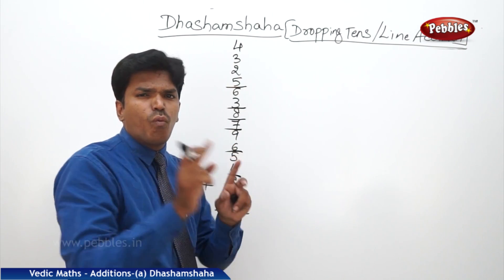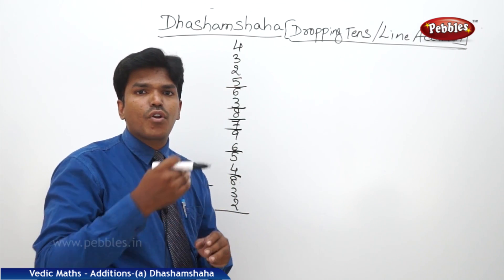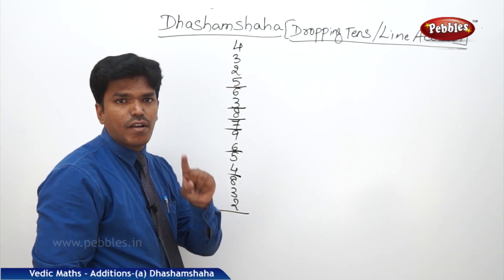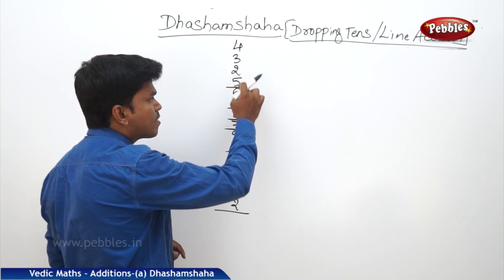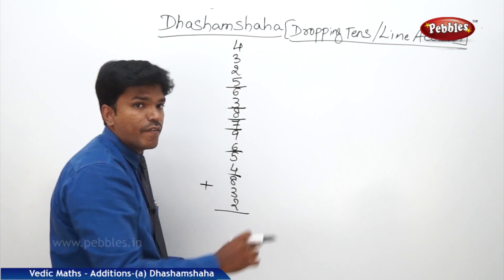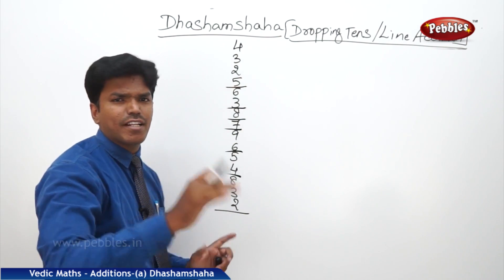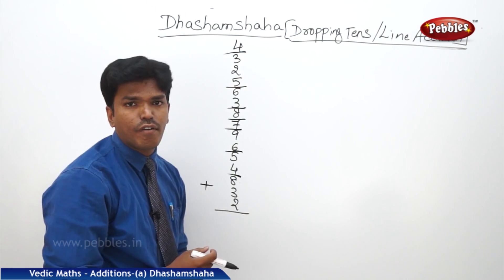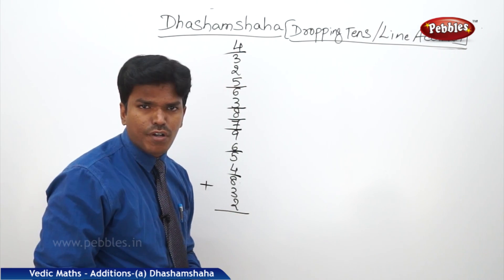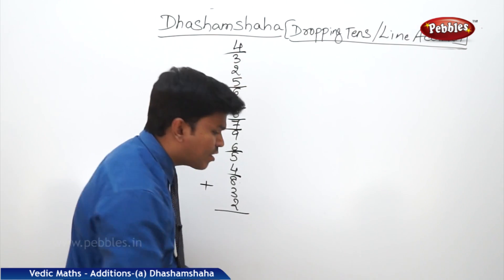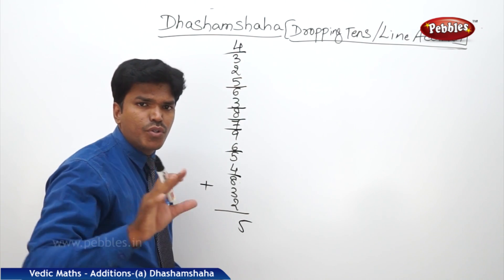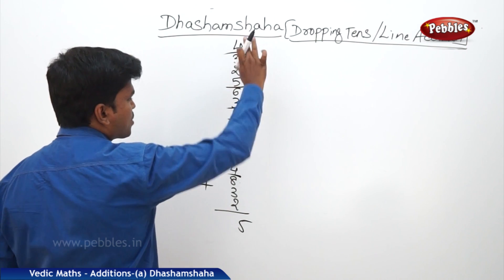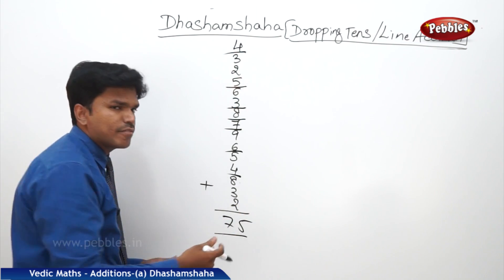Immediately carry that 1 to the next number. Whatever the number, after dropping 10, you need to carry to the next number. So 1 plus 5? 6. 6 plus 2? 8. 8 plus 3? 11. More than 10, so again drop a 10. Remaining is 1. So 1 plus 4? 5. Lastly, the remaining is 5. Write that 5 immediately below. Now count how many tens you have dropped: 2 plus 3 is 5, and 5 plus 2 is 7. So the answer is 75.